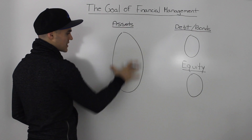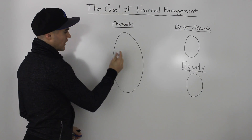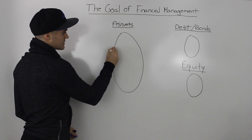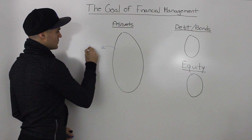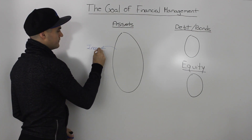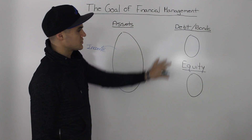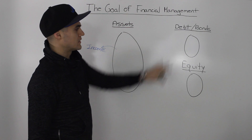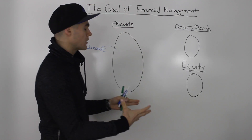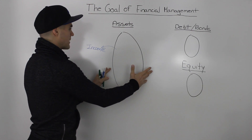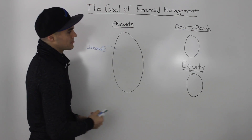These represent all your assets, and then hopefully your assets are making you some income. So you got a bunch of money from debt holders and equity holders, took that money, bought some assets, and now your assets are making you some income.